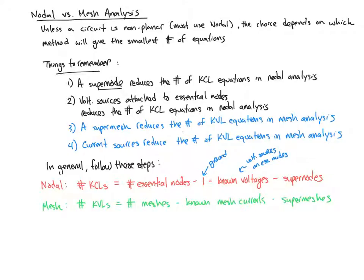And for mesh, the number of KVLs that you're going to have to write is the number of meshes you have, minus any known mesh currents. Those are due to current sources. And then minus any supermeshes you have, and those are current sources that join two meshes together. And in both cases, you're going to have additional equations if you have a supermesh or supernode, and those are constraints, those are very basic equations usually, so I usually don't consider them as a part of that analysis, and also plus any equations for dependent variables that you might have. And any time you have a dependent variable, you're writing those variables in terms of either your nodal voltages for nodal analysis, or your mesh currents for mesh analysis.